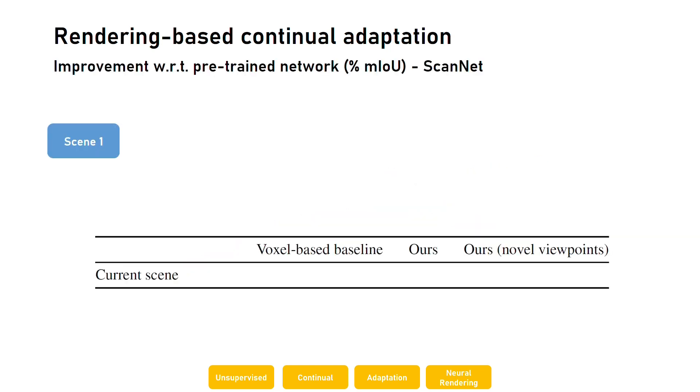Our method allows successfully adapting over multiple scenes. When considering at each adaptation step the performance on the latest scene, we find that our method improves on the pre-trained network on average by 3.3% mIoU on 10 scenes from the ScanNet dataset, achieving similar results with replay of both training and novel viewpoints and outperforming a voxel-based baseline.